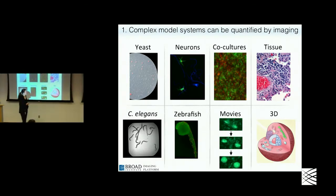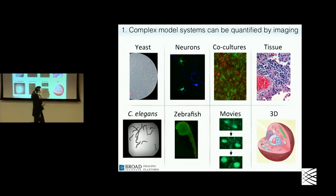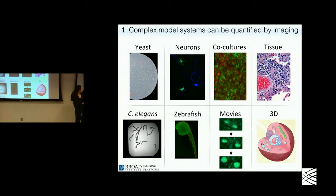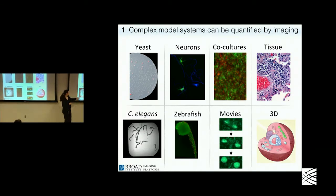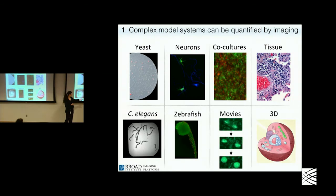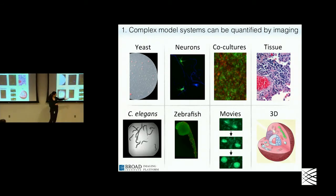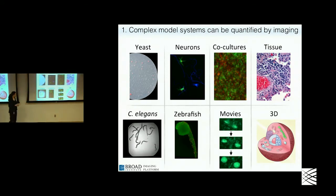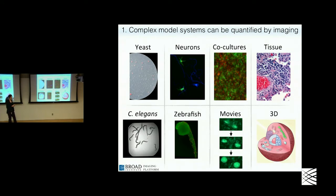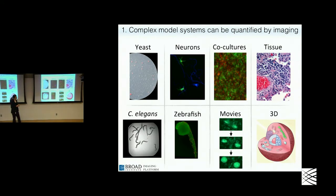Complex model systems can be quantified by imaging. This includes not just single cells growing in dishes, but more complex cell types like neurons and co-cultures, as well as tissue and organoids, whole organisms like C. elegans and zebrafish that can be studied in high throughput, and multi-dimensional images like movies and three-dimensional imagery. All of these contain a vast amount of quantitative information that we can extract using automated approaches.